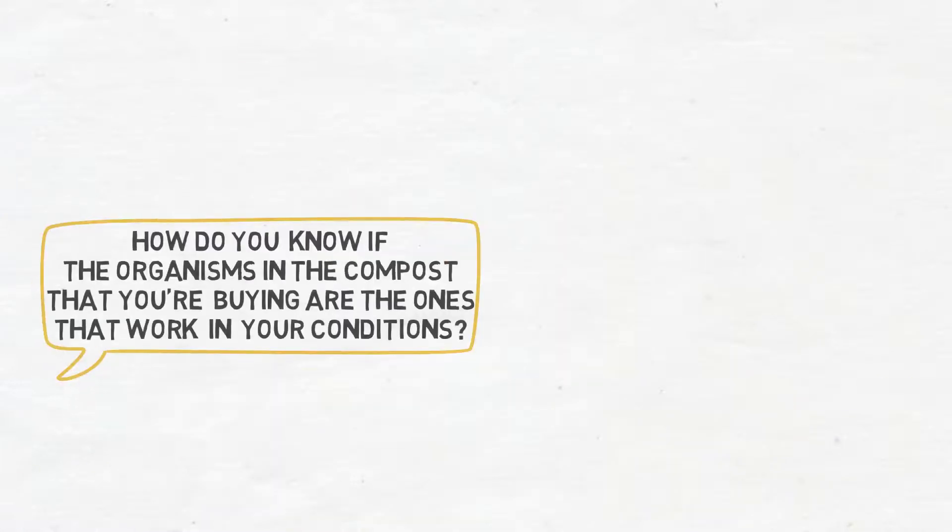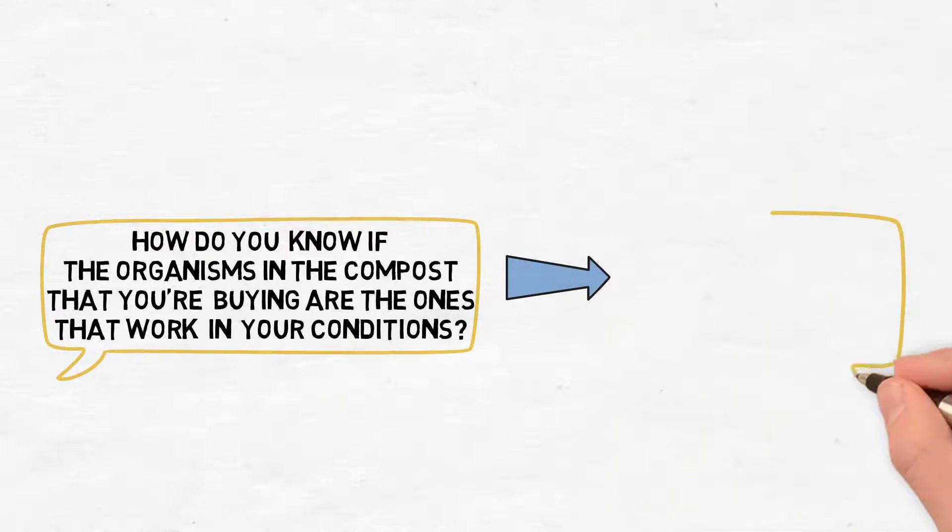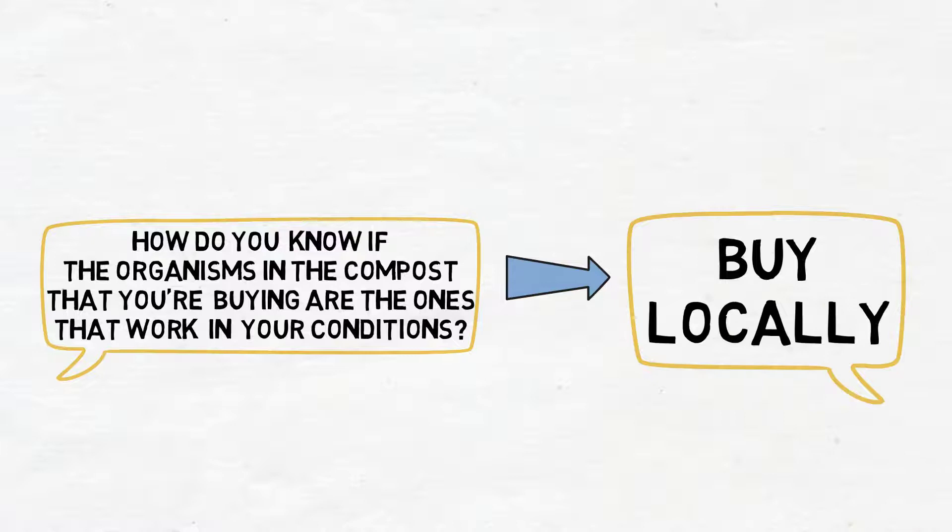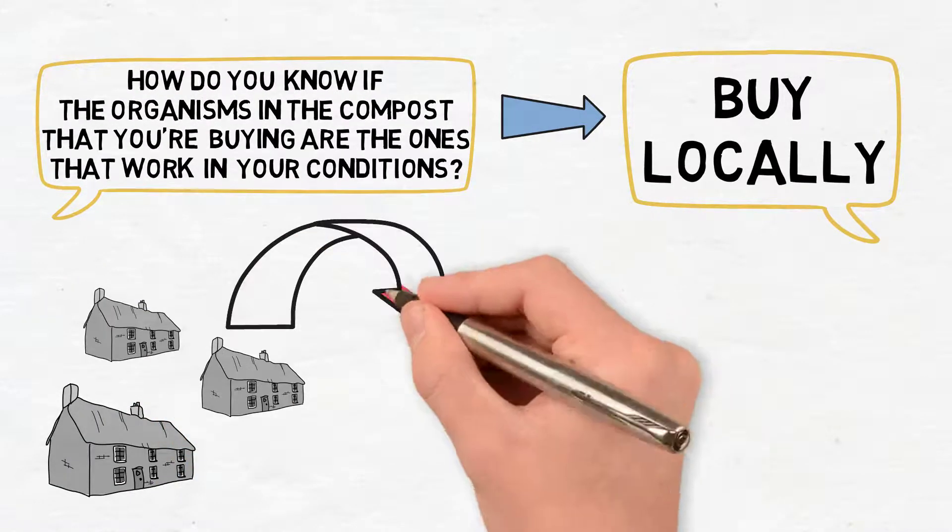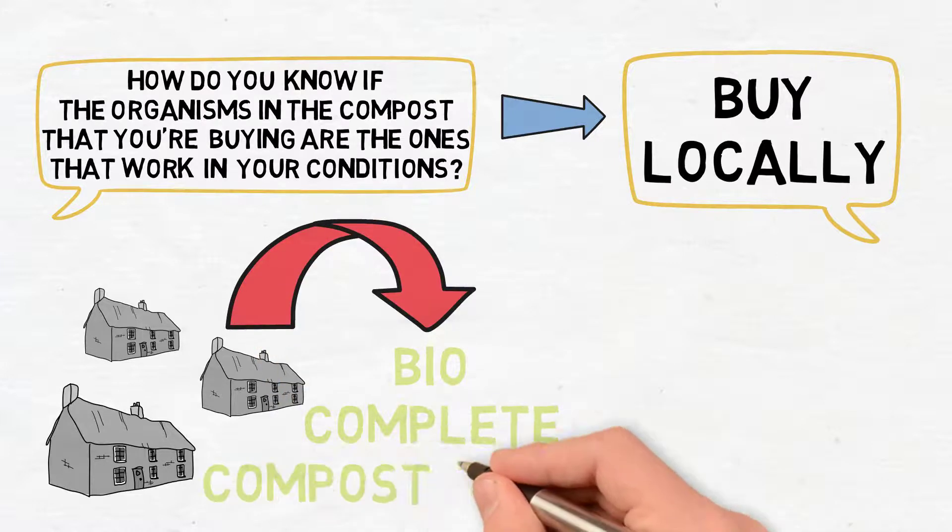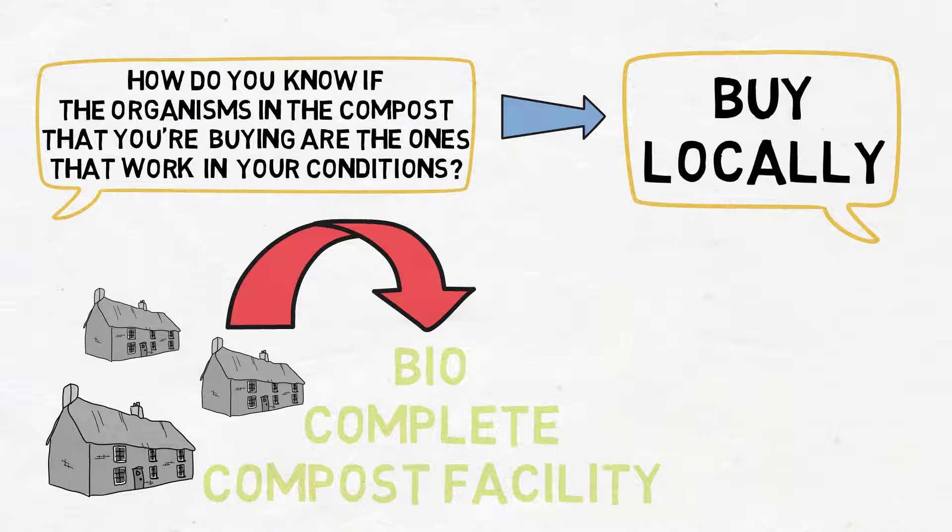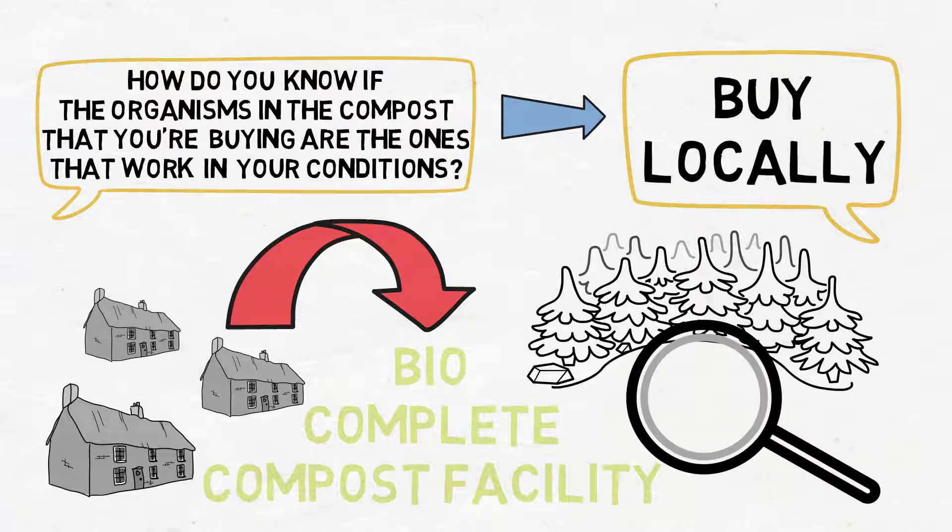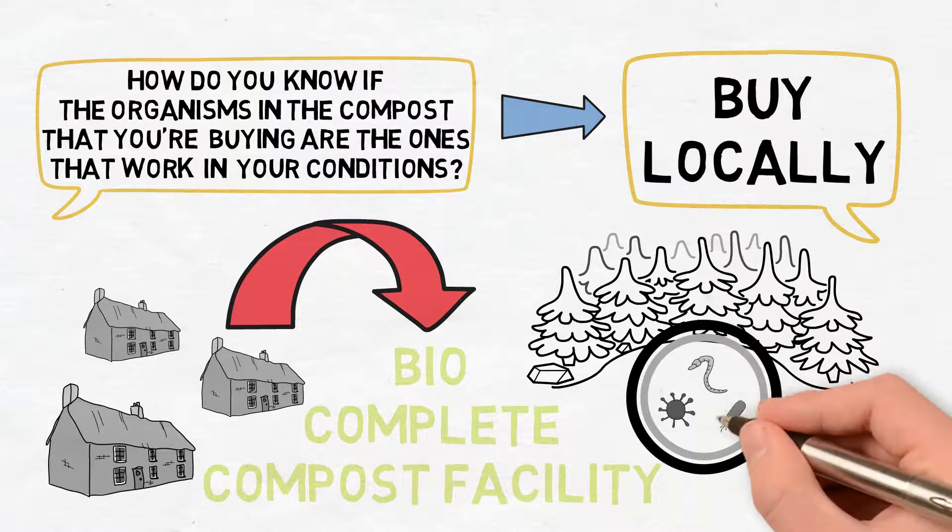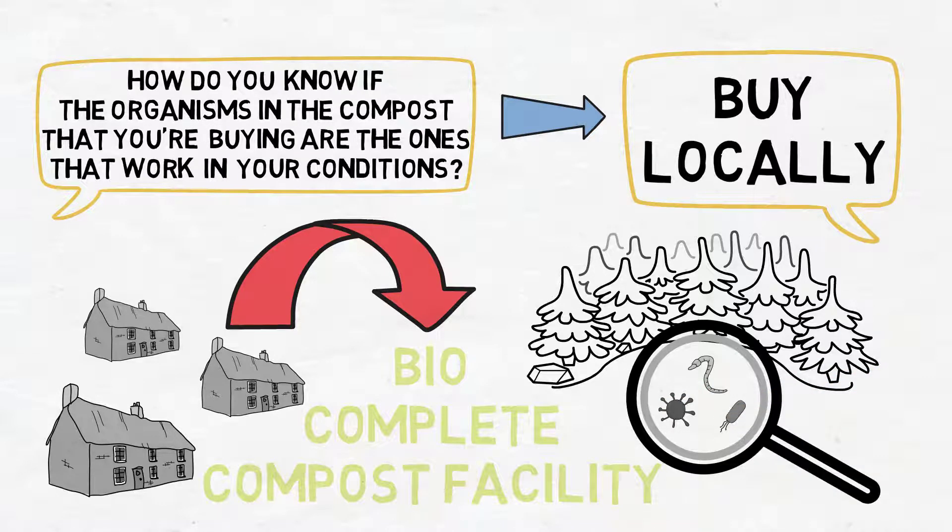So how do you know if the organisms in the compost that you're buying are the ones that work in your conditions? You buy locally. So we want lots and lots of farms. Every county ought to have its bio-complete compost facility. So their starting materials are all from the local area with the local organisms on it. And all the proper conditions are maintained during that composting process so that you're selecting for just the beneficials and not the bad guys. So that's kind of our intellectual property.